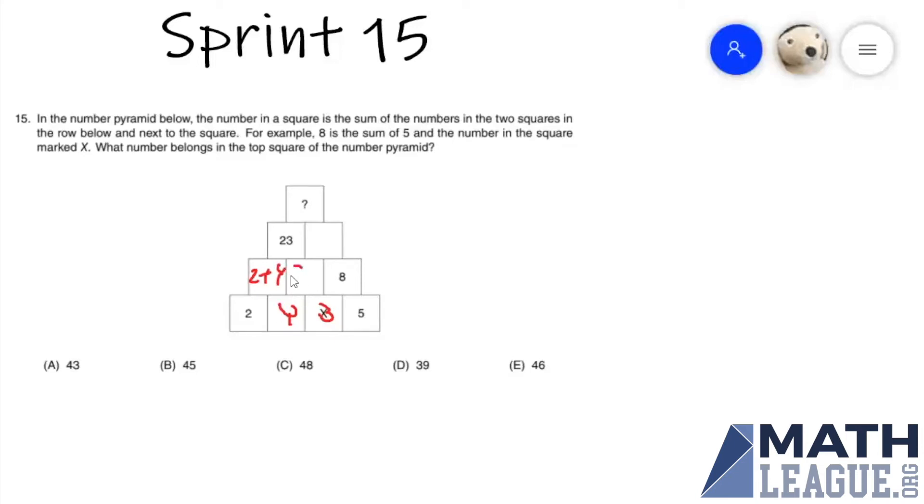And the number here would be three plus y. And then we see that 23 would then be the sum of two plus y and three plus y, or five plus two y. So we have 23 equals five plus two y.